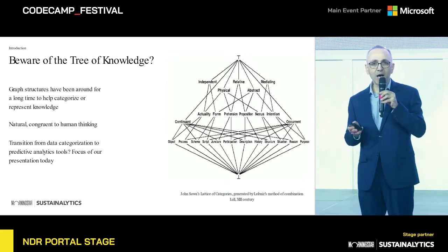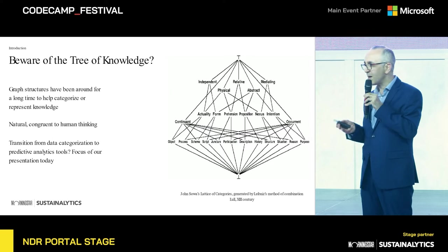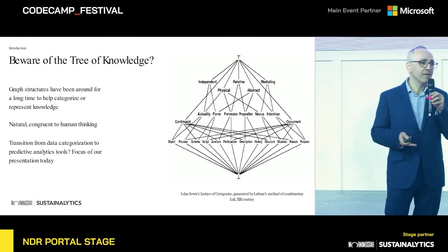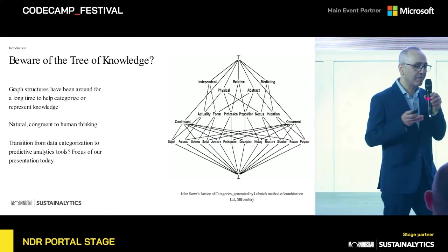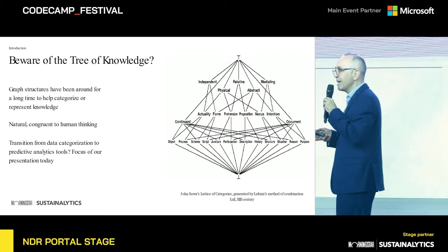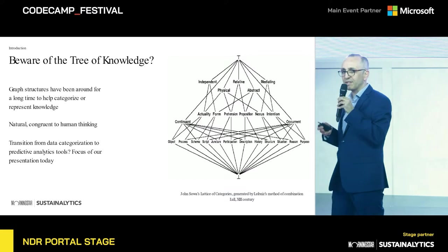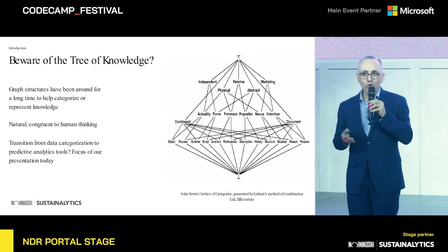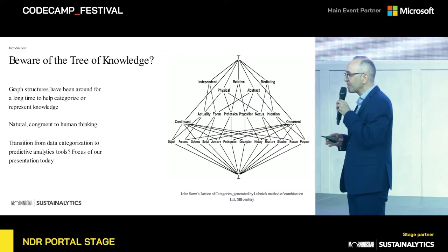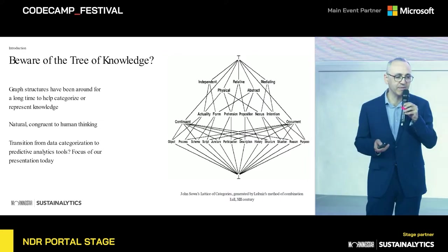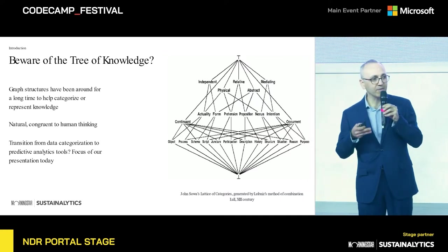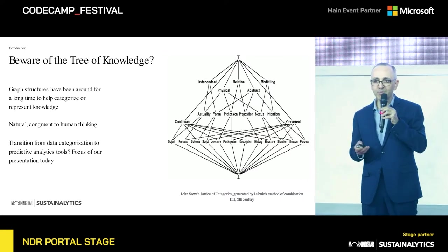We're going to be speaking about how Morningstar Sustainalytics, the company that I represent, has been using knowledge graphs of the 21st century — artificial intelligence and machine learning — and the graph structures in them to explore the world economy, to ask the hard questions about how corporations behave, and to help with the answers of these questions, to help investors to make the world a better place.